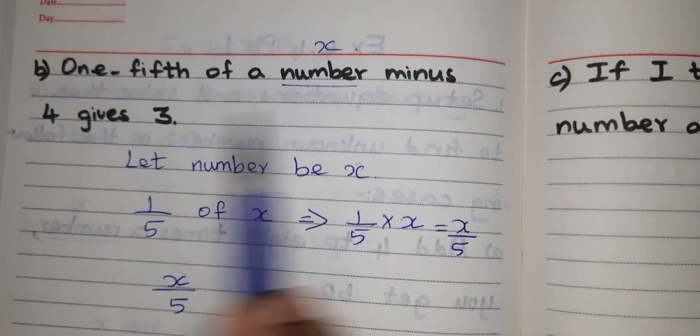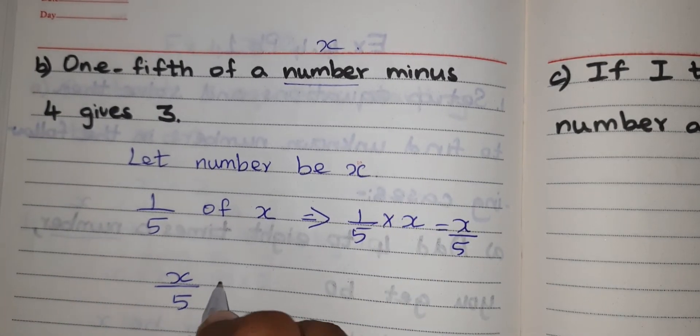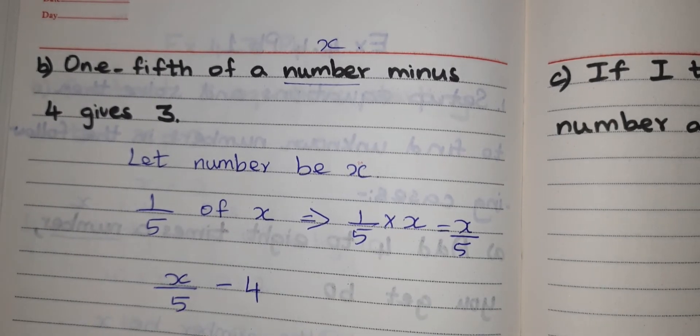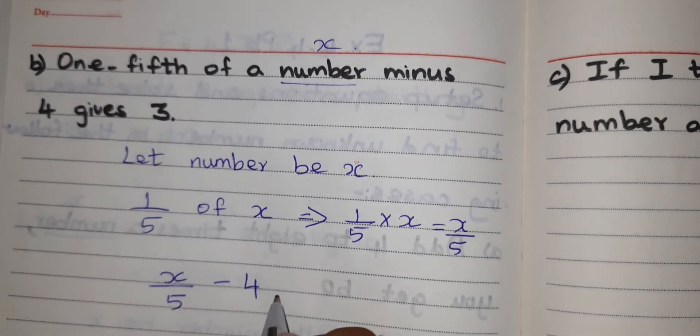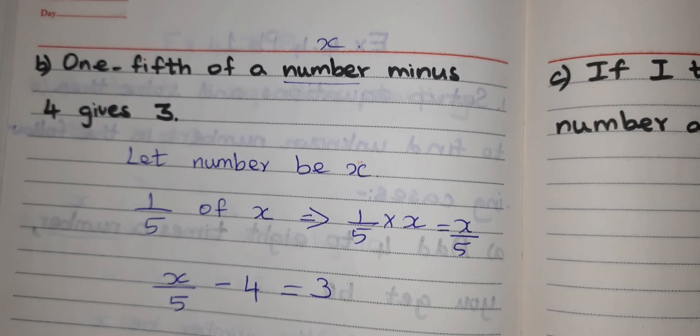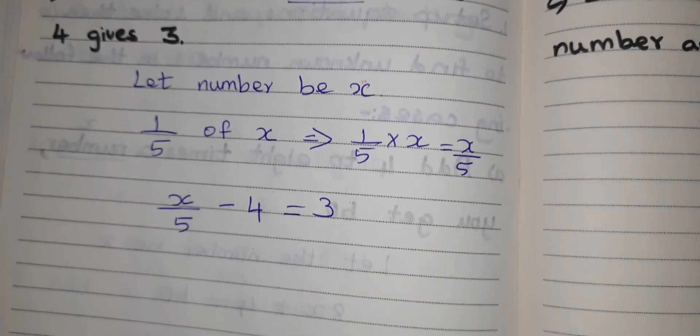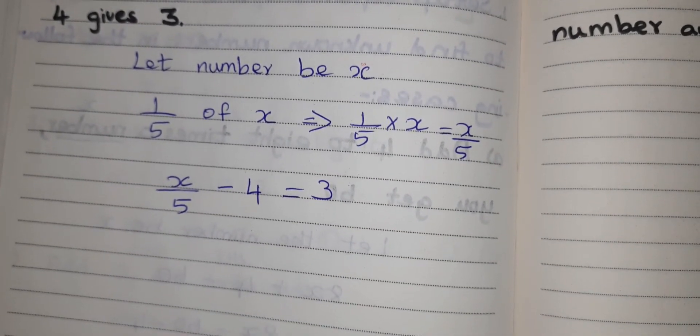Next minus 4, minus 4 gives 3. Gives means equal to 3. This is the equation for the statement. Now I have to find out the X value.